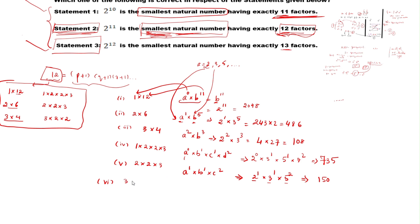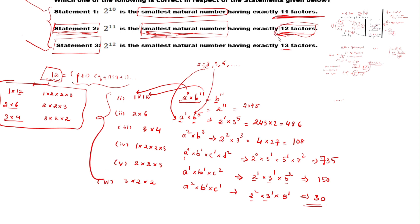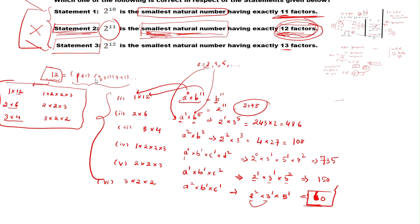Our final case (3×2×2): number form is A squared times B to the power 1 times C to the power 1. Taking A=2, B=3, C=5 gives 4 times 3 times 5 = 60. So our smallest number in all the cases having exactly 12 factors is 60. Since they have given 2 to the power of 11, which is 2048, statement 2 is wrong. Only statements 1 and 3 are correct.